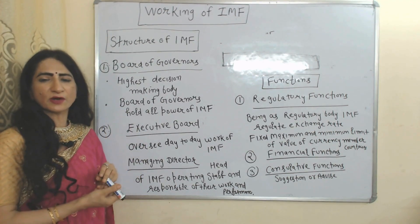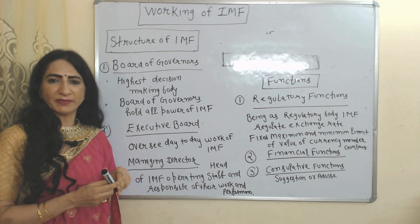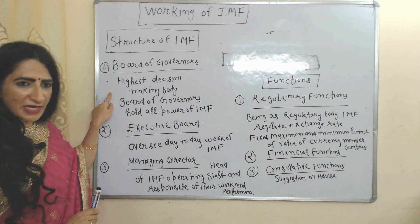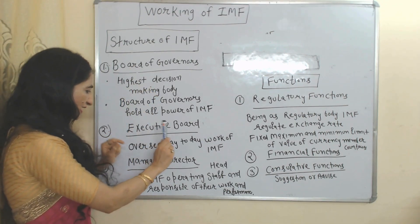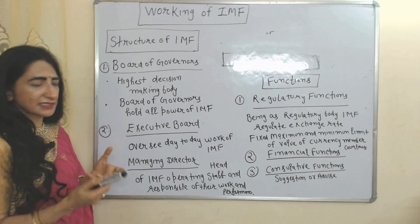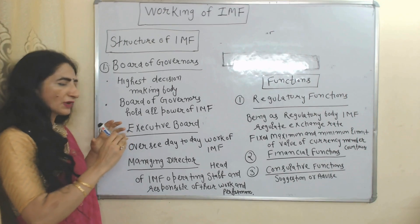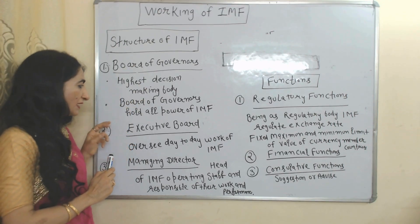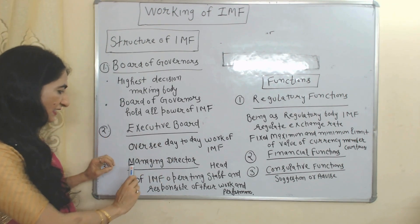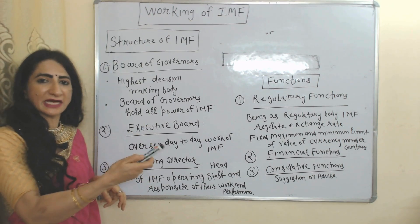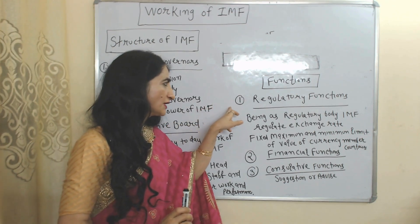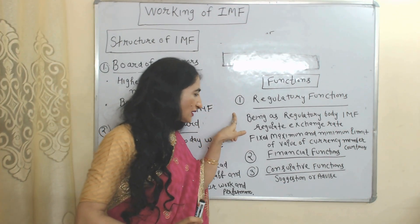Now we talk about the working of IMF. Working of IMF mainly includes structure and functions. Structure of IMF includes: Board of Governors, Executive Board, and Managing Director. Board of Governors is the highest decision-making body — it holds all power of IMF. Executive Board oversees day-to-day work. Managing Director is the head of IMF operating staff and is responsible for their work and performance.